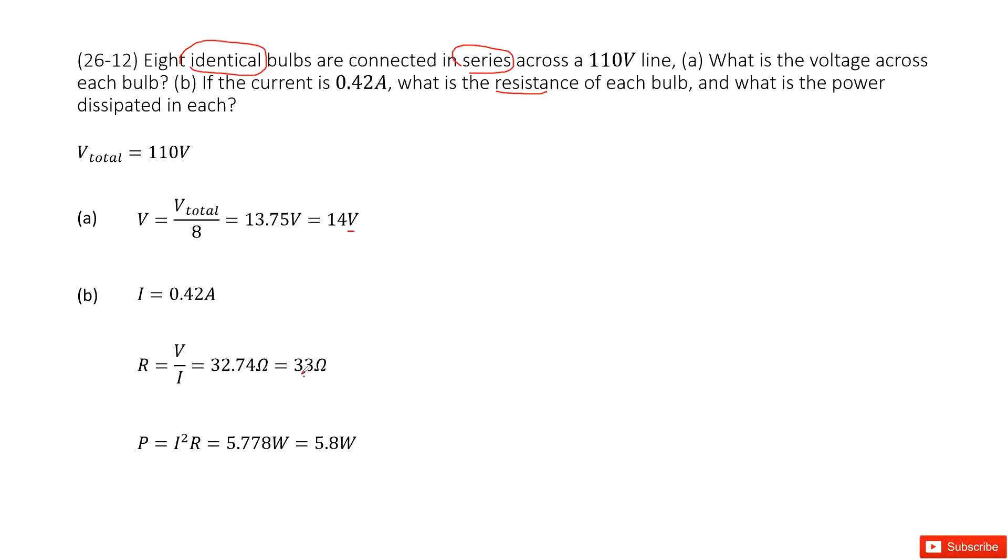The next one, calculate the power for each lightbulb. That is the current square times the resistance. So input the given quantity. Get the answer there. Thank you.